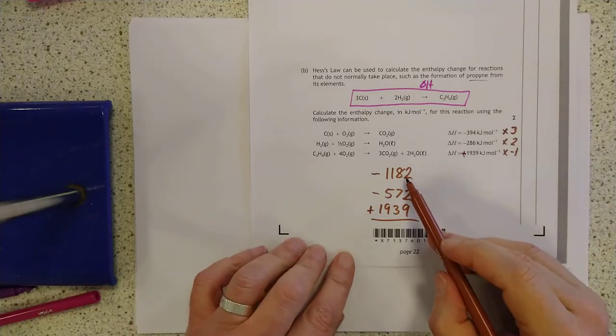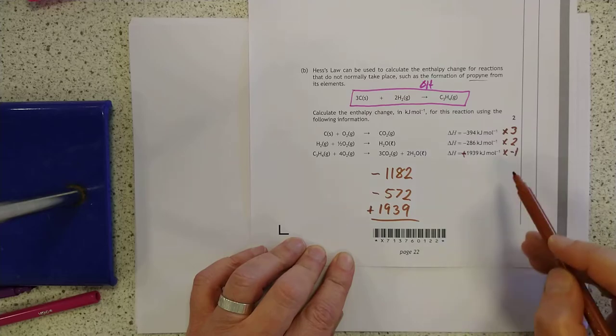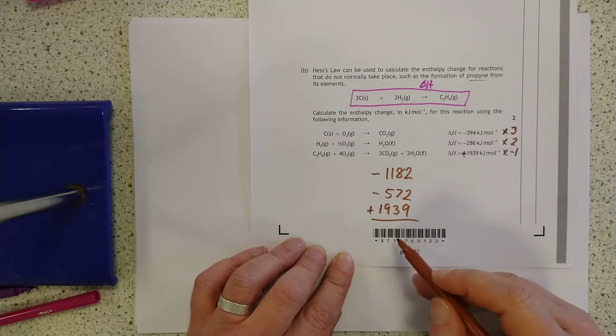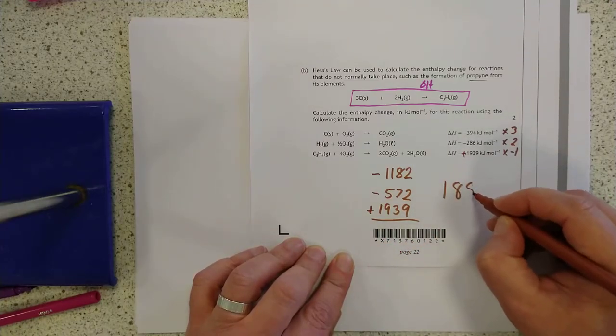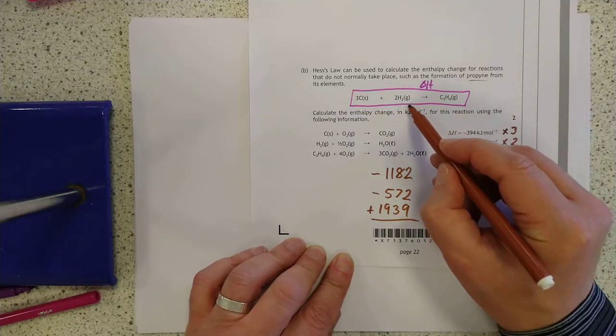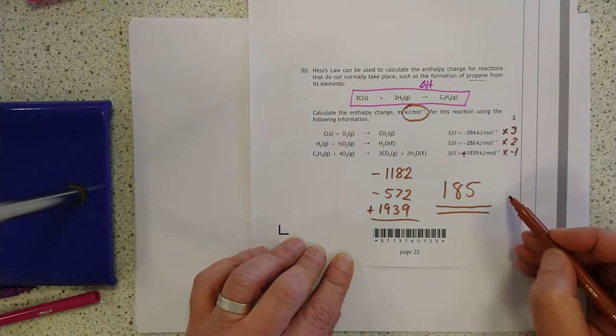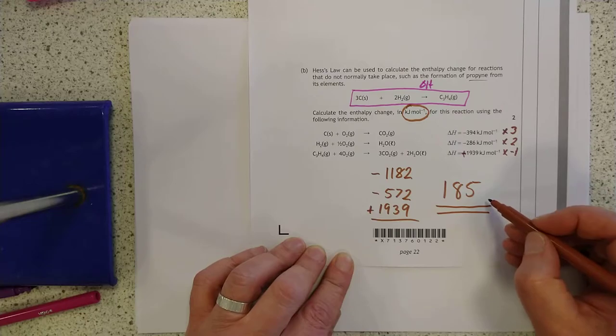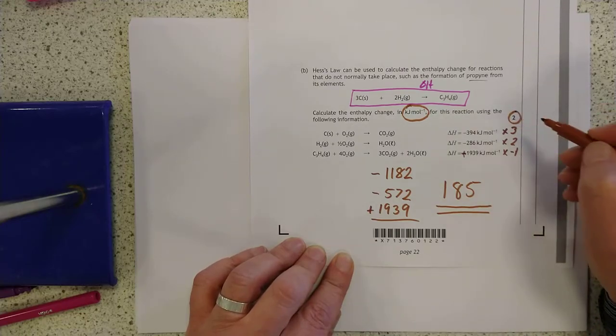So, there we go. There's three lots of negative 394. There's two lots of negative 286. And negative one of negative 1939, which becomes positive 1939. All you do is add them all together, and you get 185. As often happens in chemistry, the units are mentioned in the question, so please write nothing at all in that case. Because if you accidentally write joules per mole, or just kilojoules without the mole, then you would lose one of these two precious marks, which would be such a shame. And that is it, you got two marks.